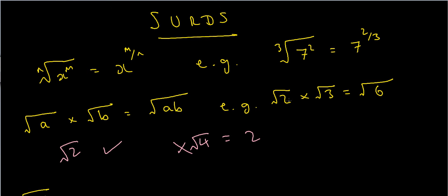For instance, if you have the square root of 2 times the square root of 3, you can combine those to make the square root of 6. More generally, the cube root of a times the cube root of b equals the cube root of ab — so the cube root of 2 times the cube root of 3 equals the cube root of 6. It doesn't matter what nth root it is, as long as the nth roots are the same, you can collect them together.